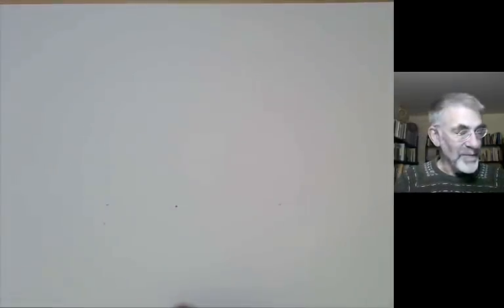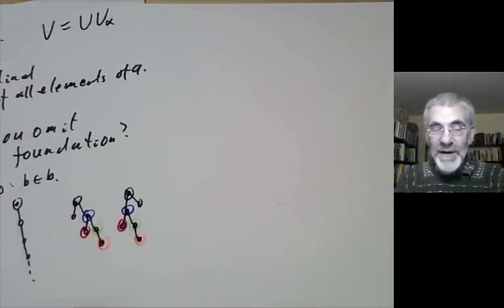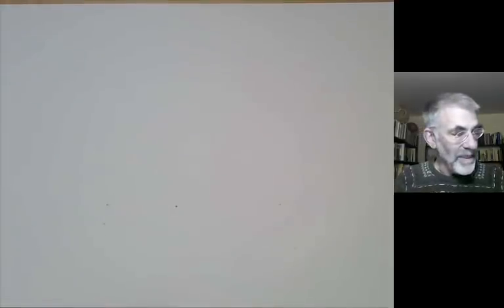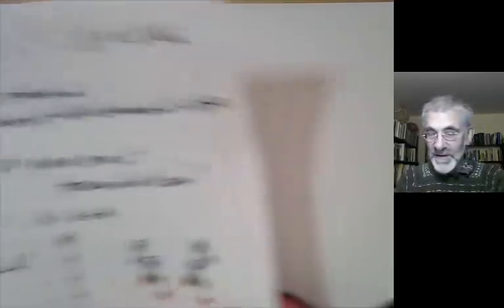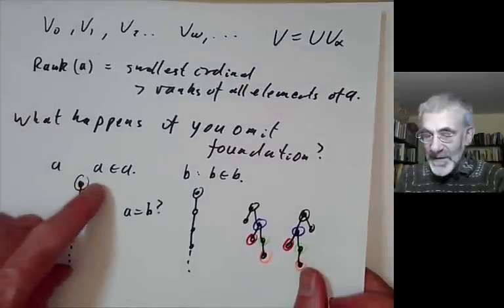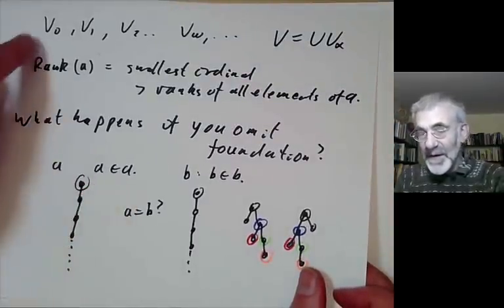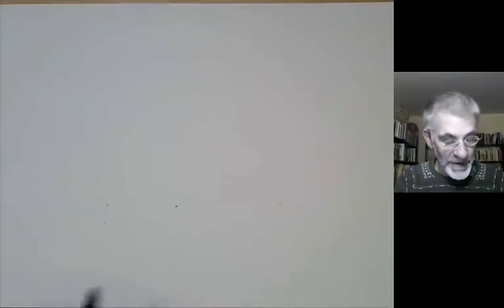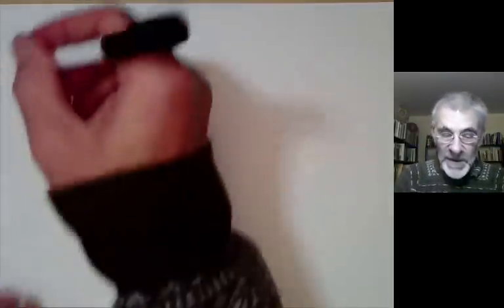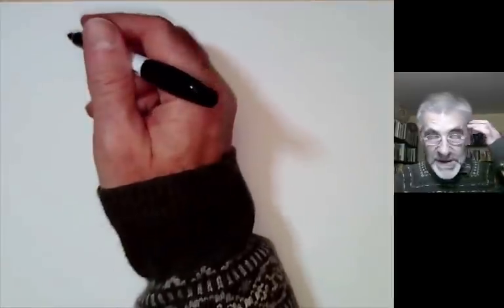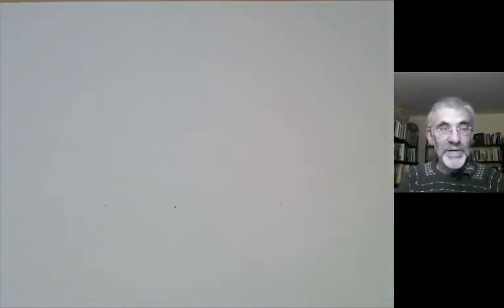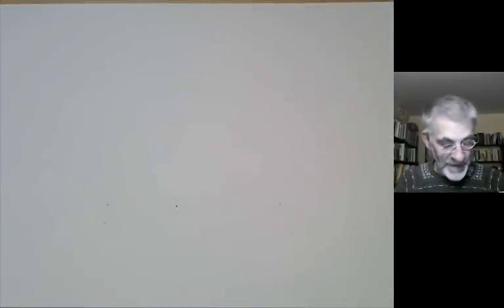So that doesn't make it quite clear that you can find models of set theory that aren't well-founded, because it's a little bit unclear how you define the von Neumann hierarchy if you start with a non-well-founded set. So let's have a slightly clearer way to see that you can find non-well-founded models.